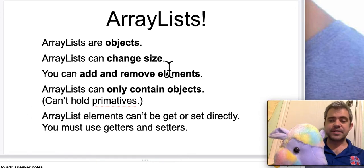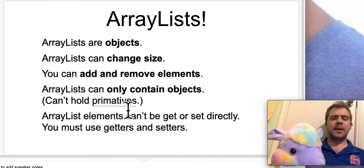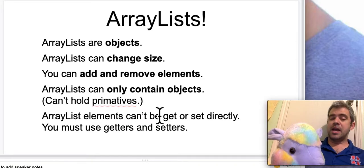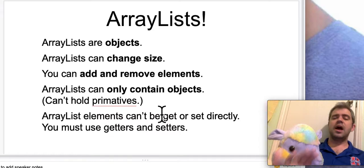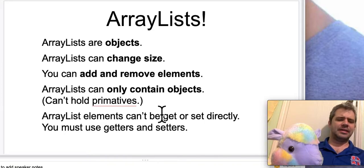ArrayLists can change size by adding and removing elements. ArrayLists can only contain objects. Now, that seems like a major drawback that it can't hold primitives. It's not. We'll get to why that is, but we'll kick that can a little later.